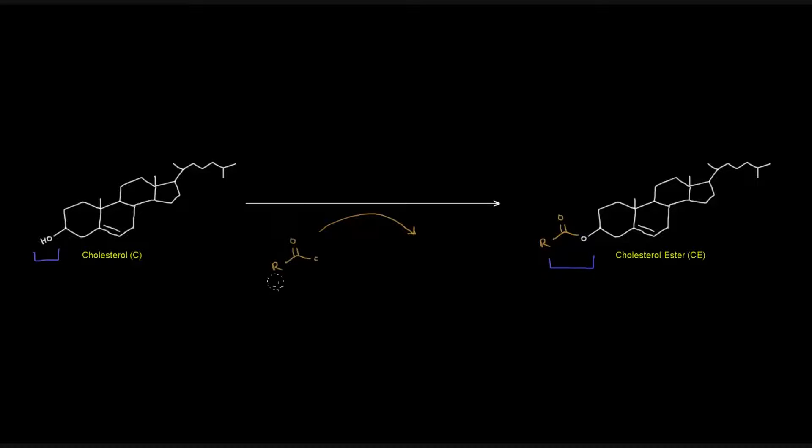The coenzyme A will just fall off. This process is catalyzed by an enzyme called acyl-CoA cholesterol acyltransferase. That name should make sense. We've got an acyl-CoA here, we've got cholesterol, and we're transferring an acyl group from the acyl-CoA to cholesterol to make this cholesterol ester.